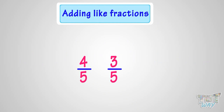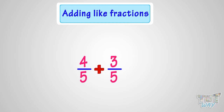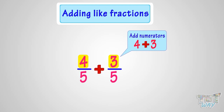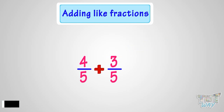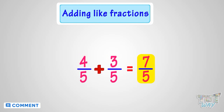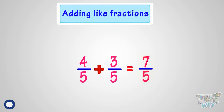Here are two fractions, 4 by 5 and 3 by 5. We have to add them. We just add the numerators of like fractions to add the fraction. Like for adding 4 by 5 and 3 by 5, we just add the numerators. Adding the numerators, that is 4 and 3, we get 7. So 7 by 5 is the sum of 4 by 5 and 3 by 5. Denominators remain the same. We just add the numerators to add the like fractions.